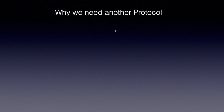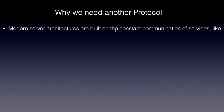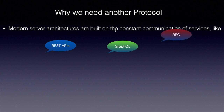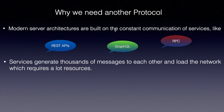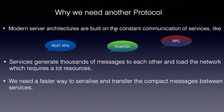Now let's look at why we need another protocol. Modern server architectures are built on constant communication between services — like REST APIs, GraphQL, and remote procedure calls — and these services generate thousands of messages to each other, loading the network and requiring a lot of resources. We need a faster way to serialize and transfer compact messages between services. Protocol buffers address all these issues.